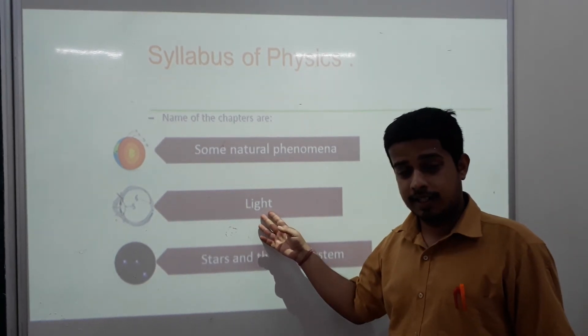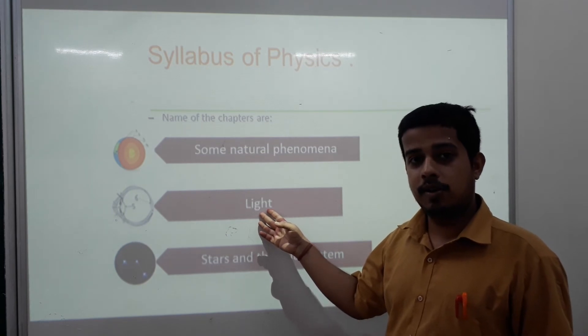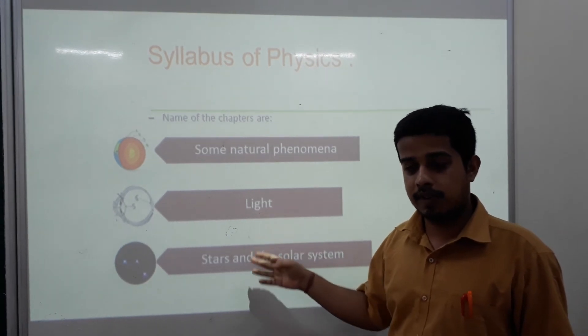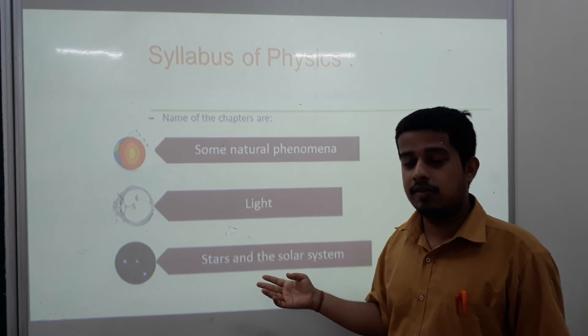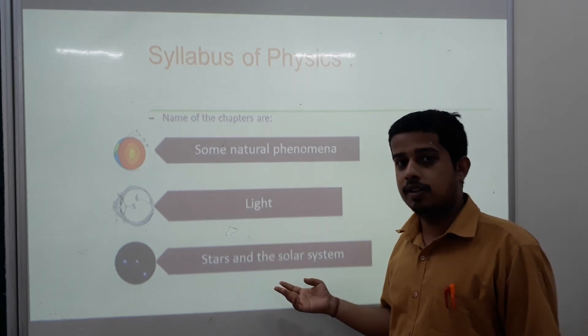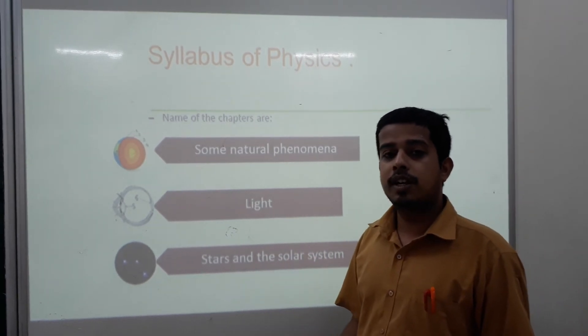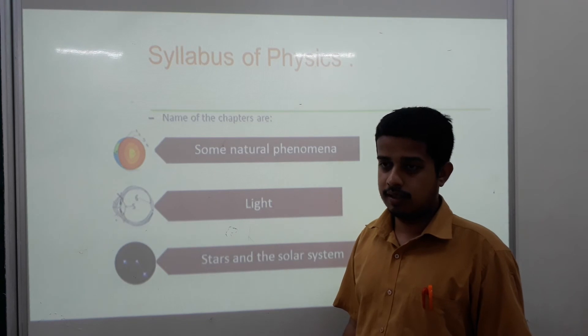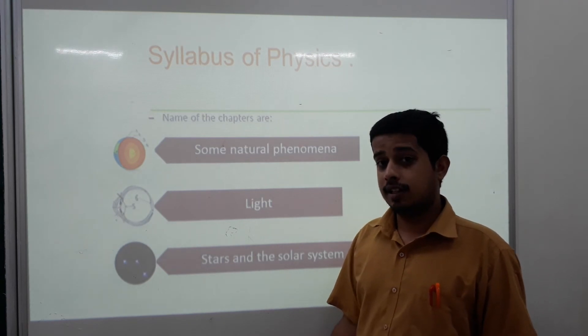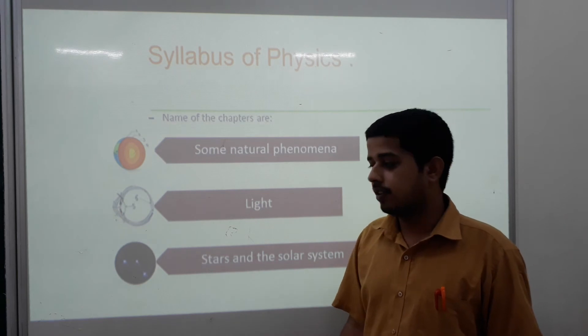Next chapter is Light. You know, from class 6, you have read about some basic concepts of light. Then in class 7, you have learned more about convex mirror and concave mirrors. And in class 8, you will learn some more upgraded concepts in light, like you will learn the principle of kaleidoscope, etc.